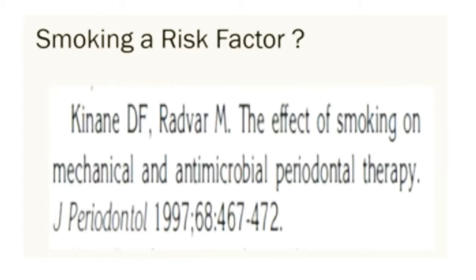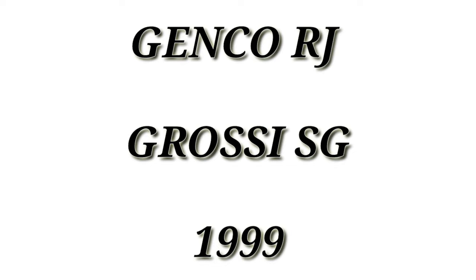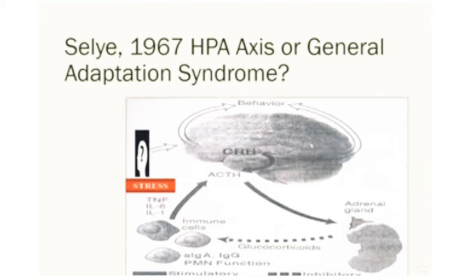For smoking, Kinane DF et al.'s paper on the effect of smoking on mechanical and antimicrobial periodontal therapy is the most cited paper on this topic. For stress, Genco and Grossi's paper on the relationship of stress, distress, and inadequate coping behavior to periodontal disease was the most cited. Linden's paper on stress and the progression of periodontal disease in 1996 also has a very significant contribution. Salee's concept of the HPA axis in 1967 underpins all these stress papers, though there is still no conclusive evidence that reducing stress has an effect on periodontitis.